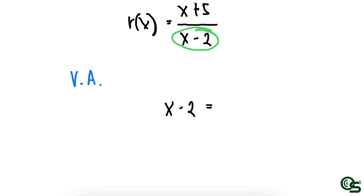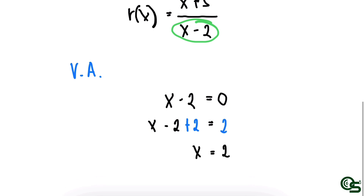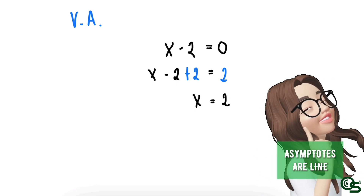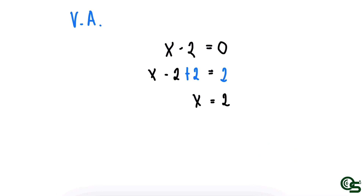Equate the denominator to zero, since we are looking for the zeros — the values of x. To find the value of x, apply the addition property of equality and add positive 2 to both sides of the equation. So I will now have x is equal to 2. Please remember that asymptotes are lines, so we are expecting an answer in the form of an equation of a line. Thus, the vertical asymptote is at x is equal to 2.